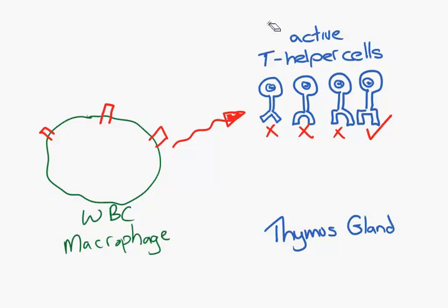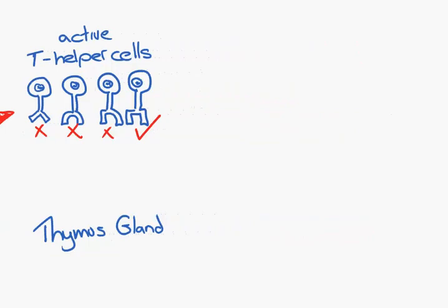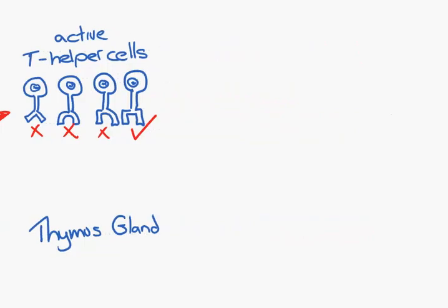This T helper cell will now be triggered to clone and clone and be released into the blood. So let's just move over here a touch. So this activated T helper cell is cloned a lot because it's activated. This activated T helper cell is now activated to clone and clone to make many, many, many of them and released into the blood.